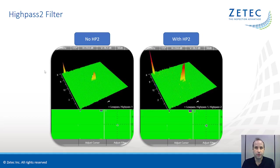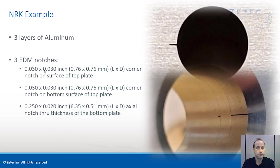Next is the high-pass 2 filter. This filter uses a proprietary algorithm to increase the amplitude of short crack signals without increasing noise. You can see the effect of the high-pass 2 filter here on the image on the right, where the image of the small crack signal is more than doubled.